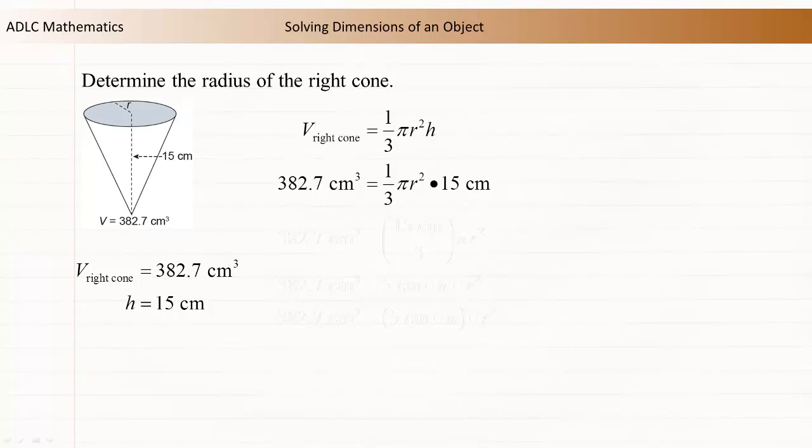The right side can be simplified by taking one-third of 15 centimeters. Simplifying the equation further gives 382.7 centimeters cubed equal to 5 centimeters times pi times r squared.